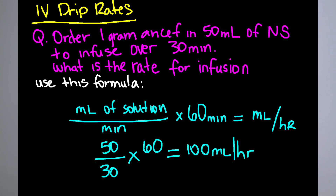Let's go over IV drip rates. You have an order for 1 gram of ANSEF in 50 mLs of normal saline to infuse over 30 minutes. What is the rate of infusion? Plug in the numbers: 50 mLs divided by 30 minutes, multiplied by 60 minutes, equals 100 mLs per hour.